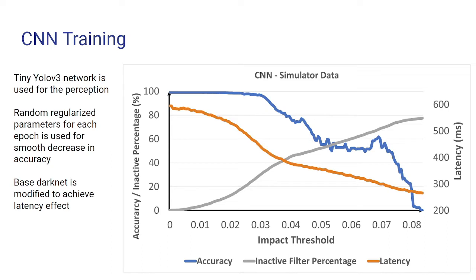To address latency, the latency should decrease as filters are removed. However, neural network packages such as TensorFlow or PyTorch, when you prune certain filters, don't actually remove them — they replace those values with zeros, and computations still happen. So we used the base .NET code and edited it in such a way that we can avoid those unnecessary computations, and you can see that latency decreases as the filters are discarded.